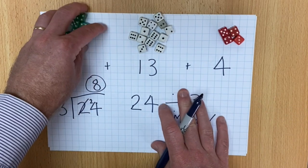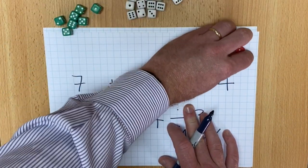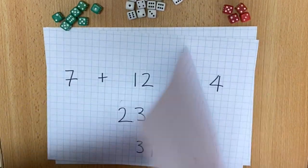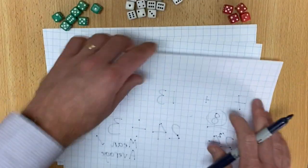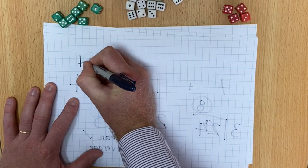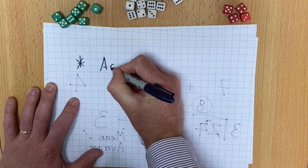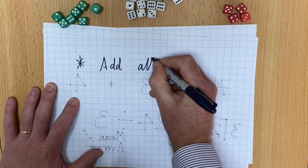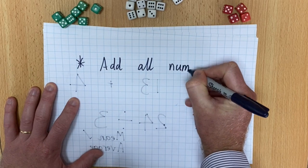So remember, just a little quick summary here. If you want to find the mean of something, you first add all numbers together.